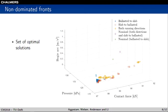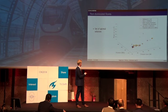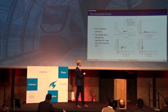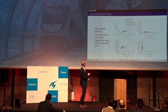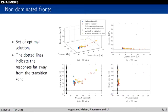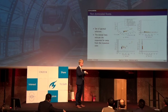If we plot this 3D figure in three different 2D views, the black lines indicate responses far away from the transition zone. In particular for the pressure, you can see that the pressure is very close to the black line, which implies that the pressure in the transition zone is close to the pressure far away from the transition zone.